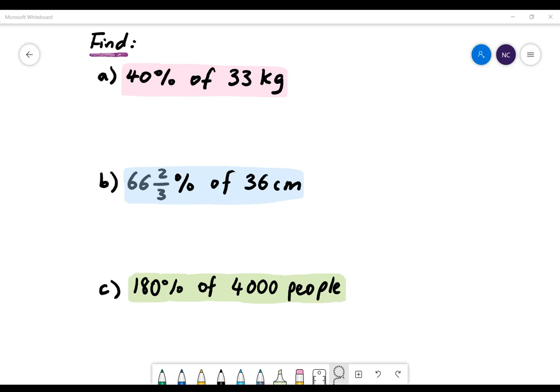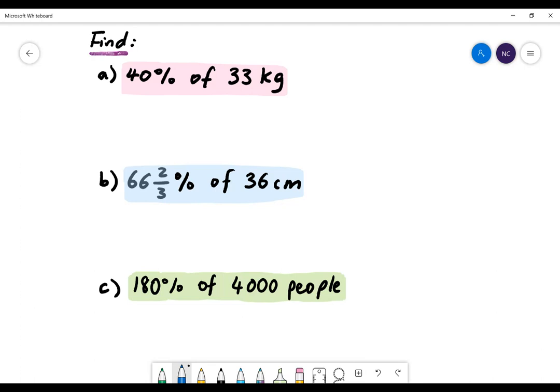Here is our first example. In these examples, we will first be converting these percentages into fractions. Part a: 40% of 33 kilograms. We'll first change 40% into 4 out of 10 multiplied by 33. Here is a fraction of a quantity. To complete a fraction of a quantity, we'll first divide 33 by 10 and then multiply by 4. So we'll be left with 13.2 kilograms.